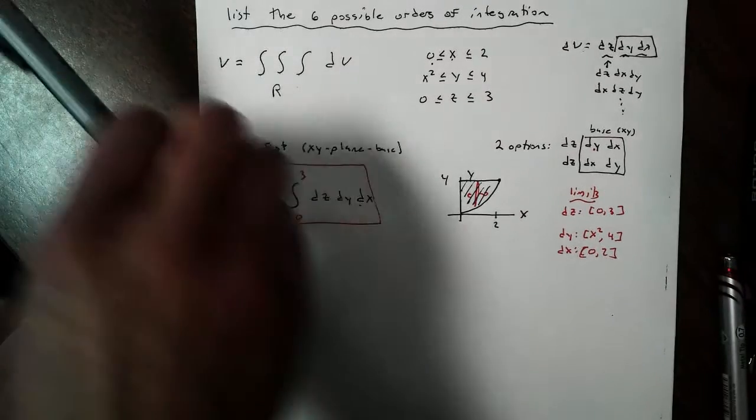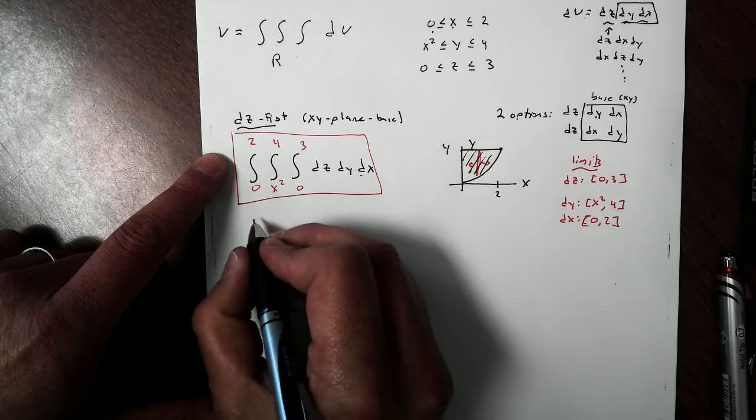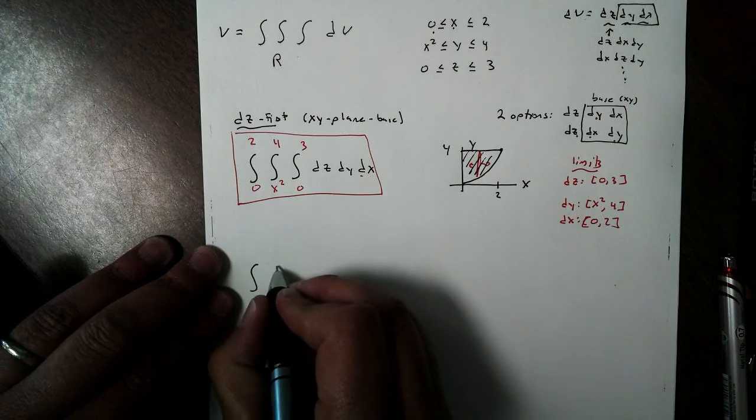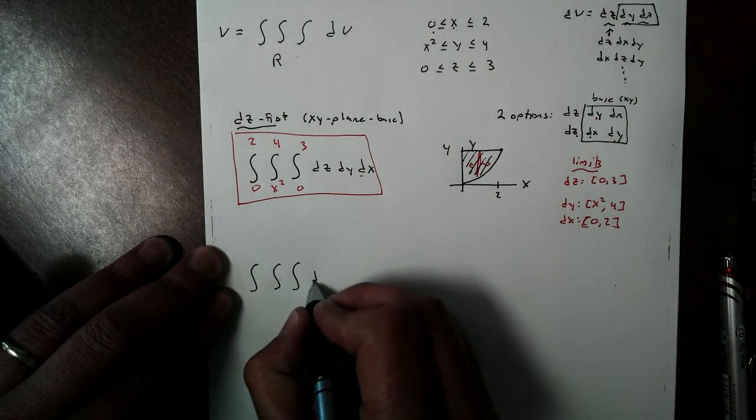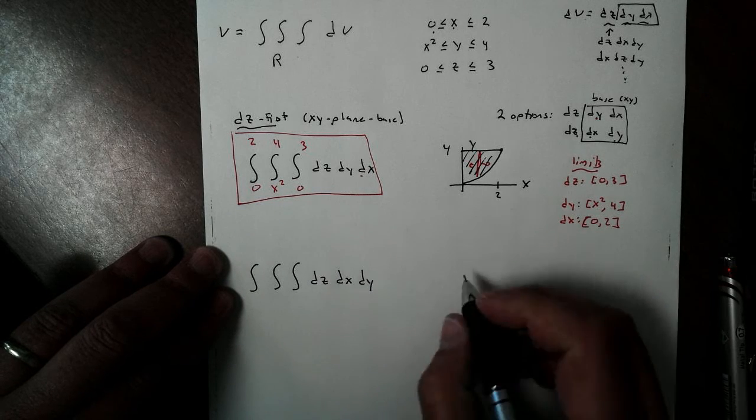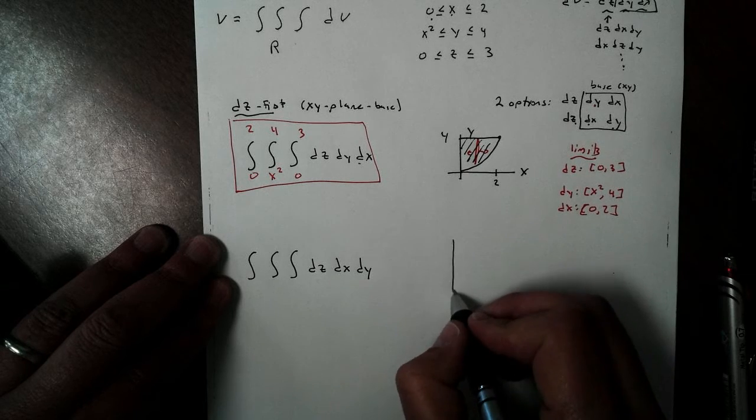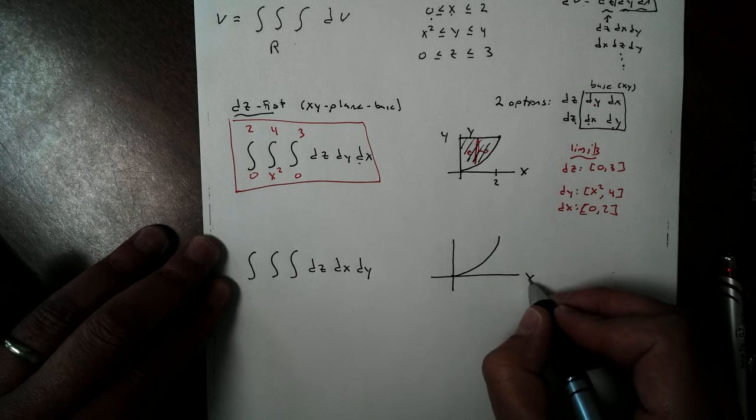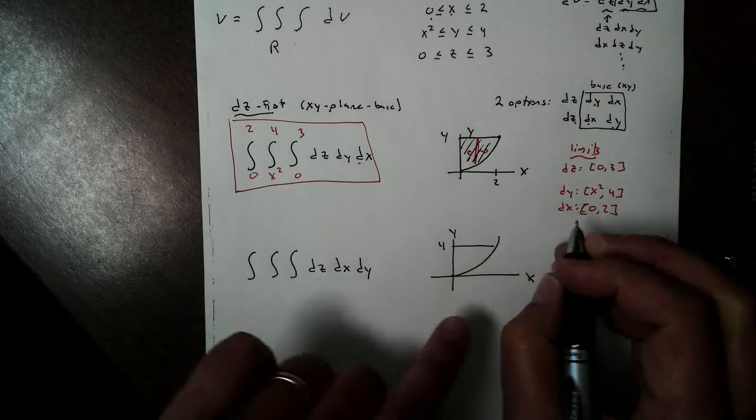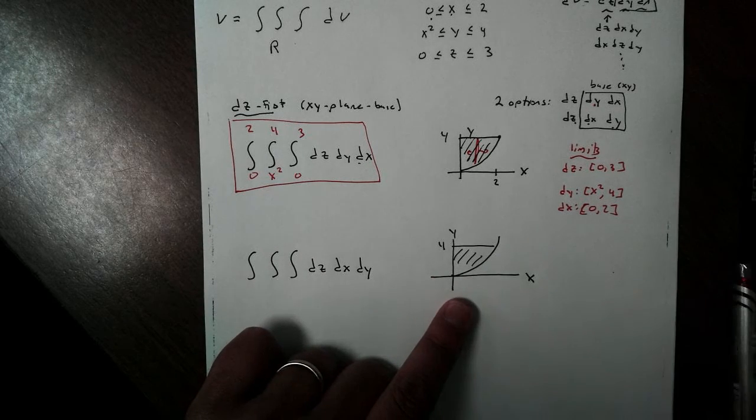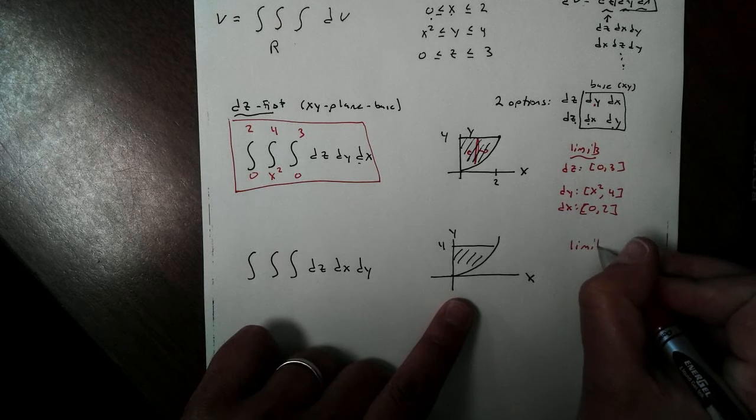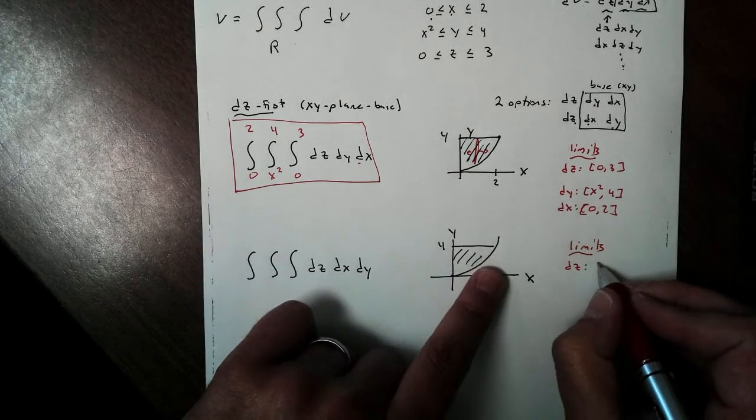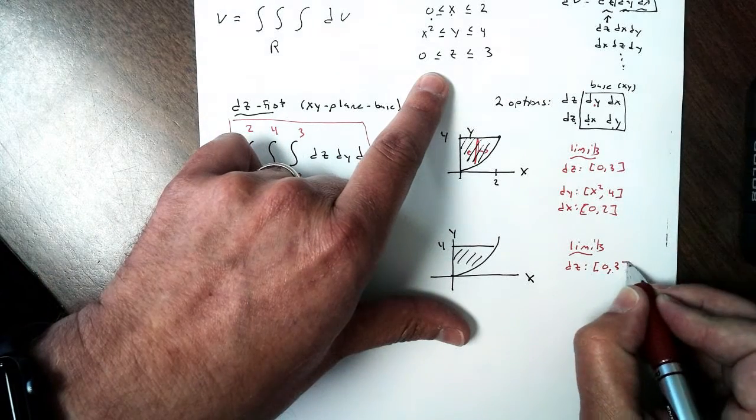Now, the other option we have for doing DZ first is using DZ, DX, DY. So let's go and take a look at that one. DZ, DX, DY. Now, my region is still the same spot. It's still the same region. Here's my X, and there's my Y, and there's 4. So when I start with my limits now, let's take a look at what happens here. My DZ, that's my change in height. Remember, we talked about this yesterday, the other day. That's my change in height. It's still going to be from 0 to 3, because that's not on the X or Y plane.